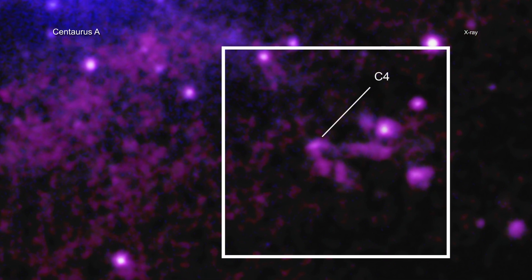Called C4, this source is located close to the path of the jet from the supermassive black hole and is highlighted here.